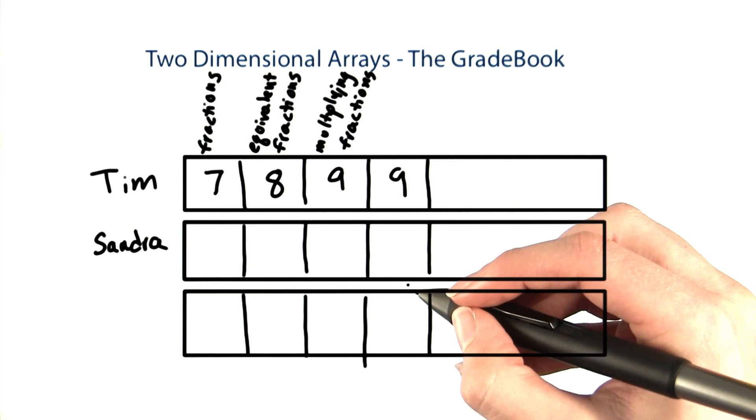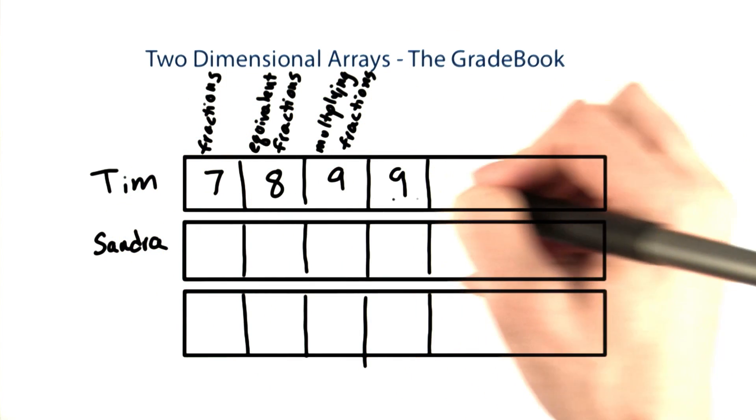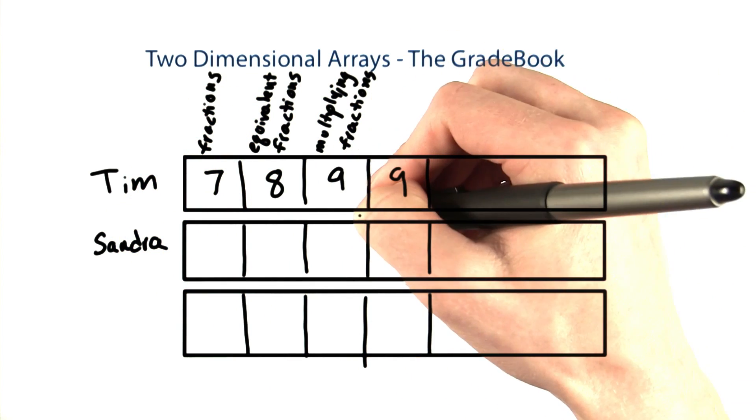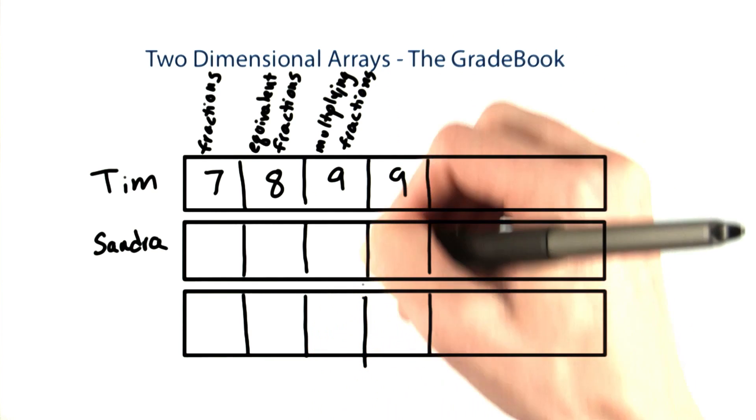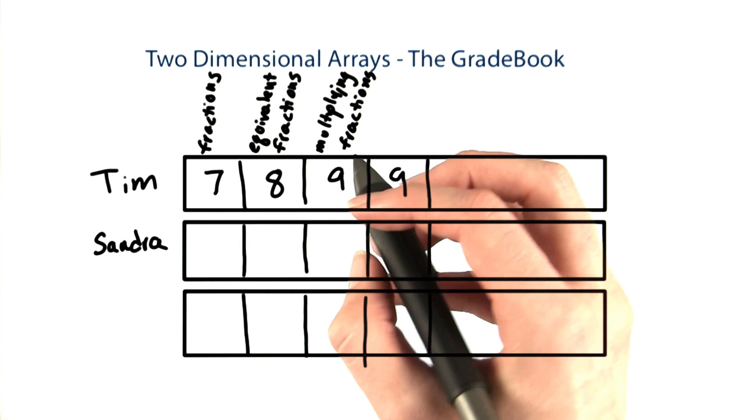This is starting to look like a 2D array. With this structure, it would be possible to calculate a total for a student and also to calculate a total for a topic, which would allow her to compute sums for each topic and then compare them to see which topics she needed to spend more time on.